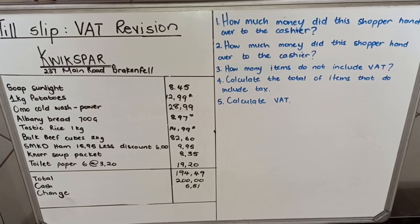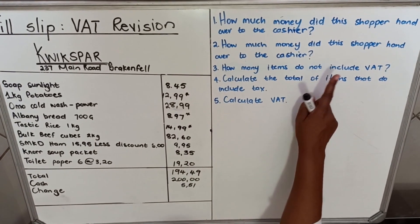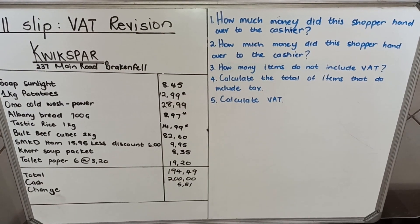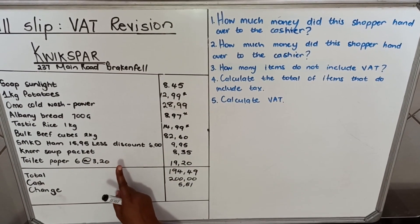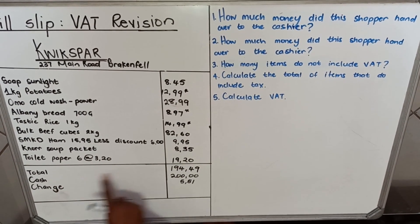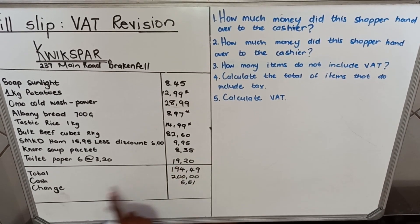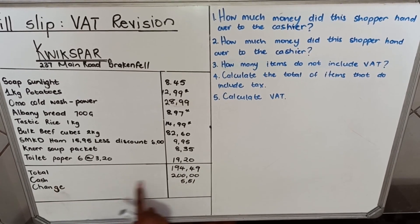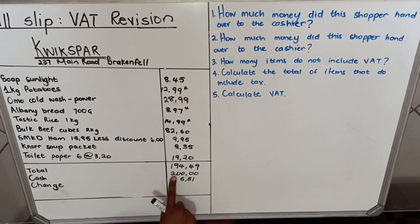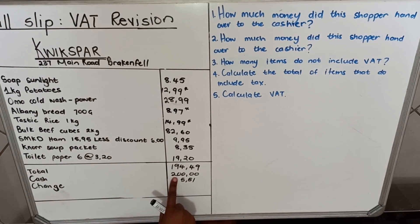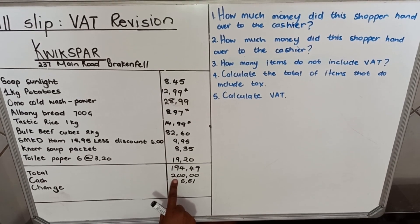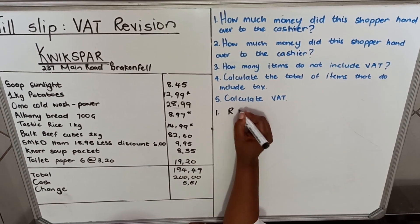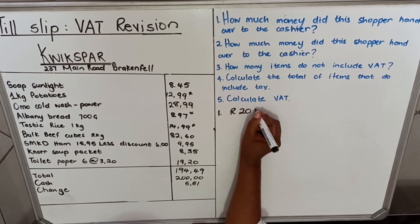Now let's look at the questions. Question one: how much money did this shopper hand over to the cashier? When you look at the till slip, it shows the total amount, and then it shows the cash that the person handed over to the cashier. They gave 200 rand, so our answer for number one is 200 rand.